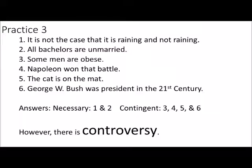Practice Activity 3 — identify as necessary or contingent. Number one: 'It's not the case that it is raining and not raining' — that's necessary; the denial leads to a contradiction. Number two: 'All bachelors are unmarried' — necessary. Number three: 'Some men are obese' — contingent; it is possible that its opposite is true in some possible world. Number four: 'Napoleon won that battle' — contingent. Number five: 'The cat is on the mat' — contingent. Number six: 'George W. Bush was president' — contingent.